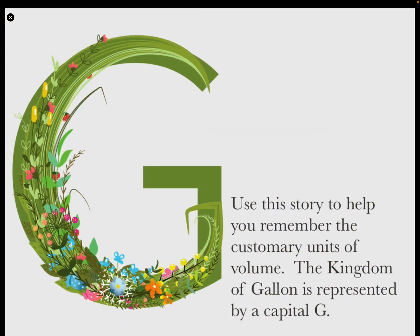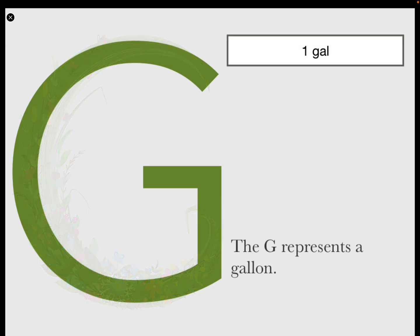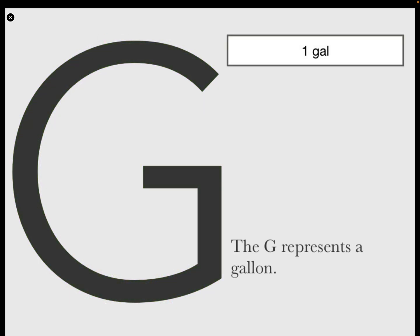Okay, you're going to use this story to help you remember the customary units of volume. The Kingdom of Gallon is represented by a capital G. One gallon. The G represents a gallon.